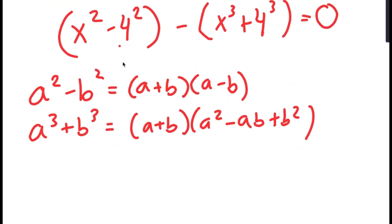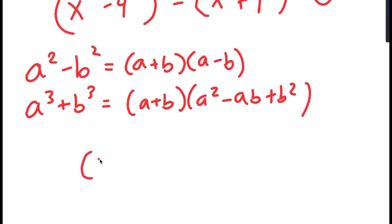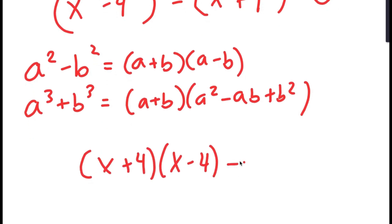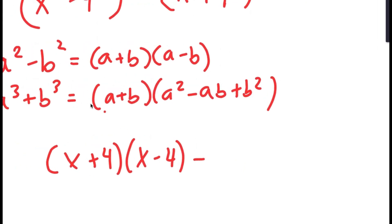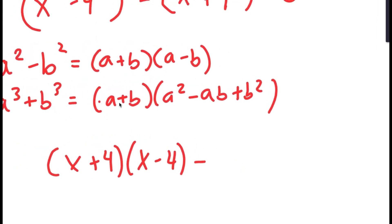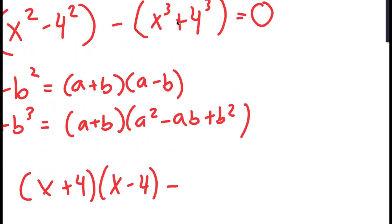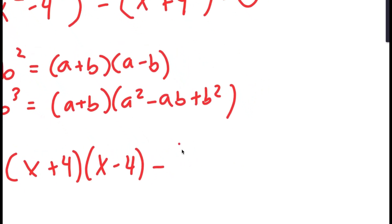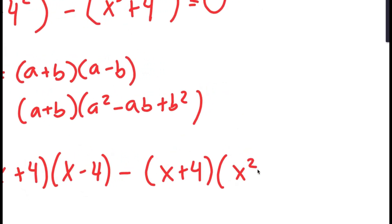So for x squared minus 4 squared, it's going to turn into x plus 4 times x minus 4. And we have minus x cubed plus 4 cubed, which turns into x plus 4 times x squared minus 4x plus 16.